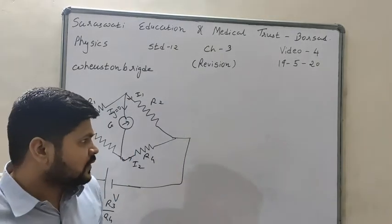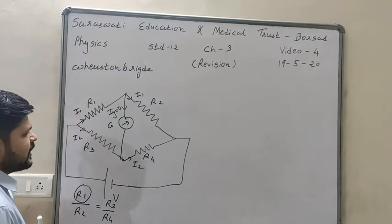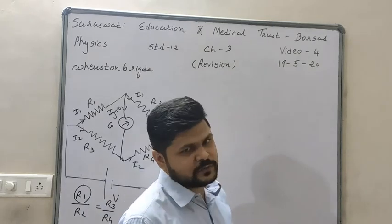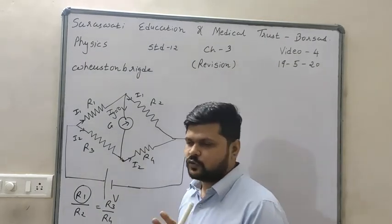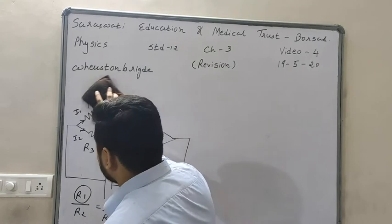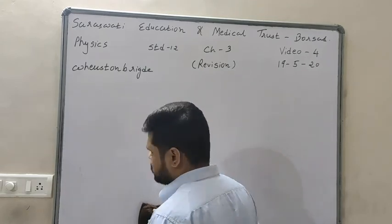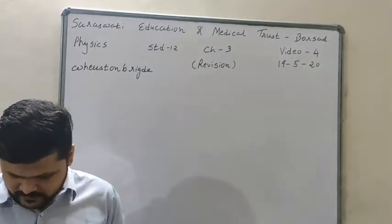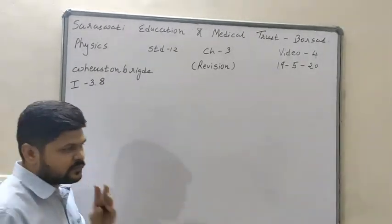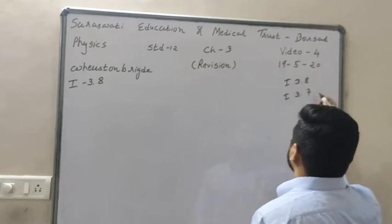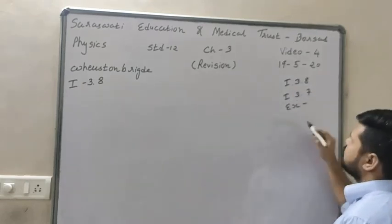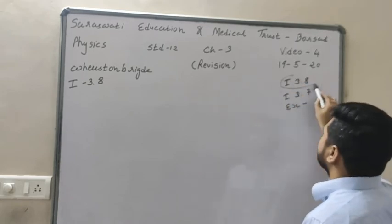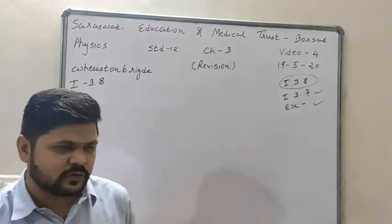There are total 3 examples based on Kirchhoff's second and first rule. Those 3 examples are very important. We will do one example that is based on Wheatstone Bridge and Kirchhoff's second rule — that is illustration number 3.8. Total there are illustration 3.8, illustration 3.7, and one more exercise example. I am covering illustration 3.8 and 3.7; the exercise example you will do by yourself.